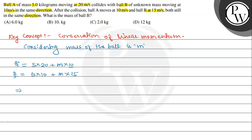Toh agar hum log conservation of linear momentum ke according hum kya likhein - Pi, that will be equal to Pf. Toh yahan se hum kya likhenge sakte hain? 5 into 20 plus m into 10, this will be equal to 5 into 10 plus m times 15, thik?